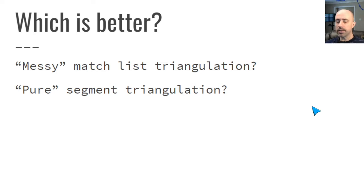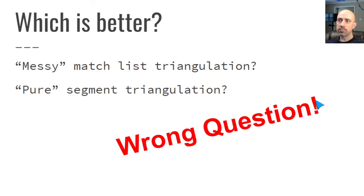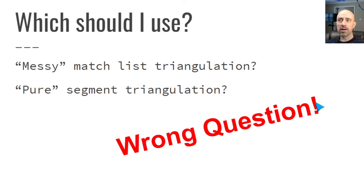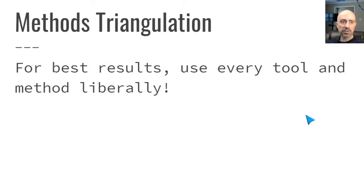A lot of people have gotten into silly arguments about which is better — matchlist triangulation and clustering versus segment triangulation. I have my preference, but I think if we're asking which one is better, we're asking the wrong question. It reminds me of the meme where the little girl says, 'Why don't we just have both?' The answer is that we should use every tool that we can find, as well as we can use it, in every situation to get the best results. So let's use both of these processes.